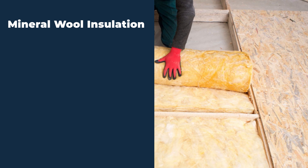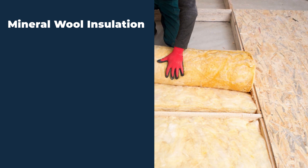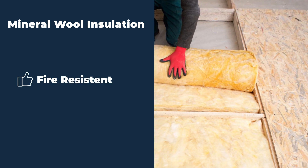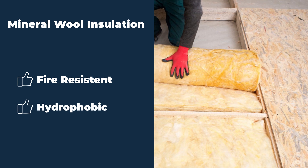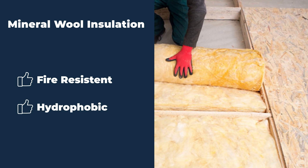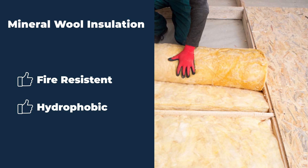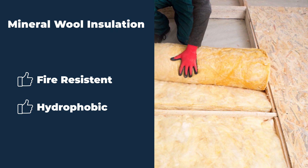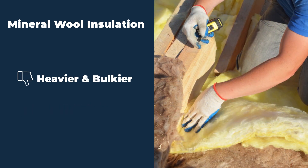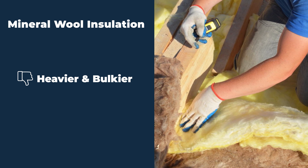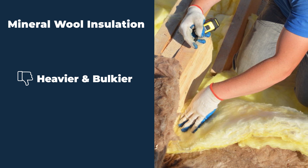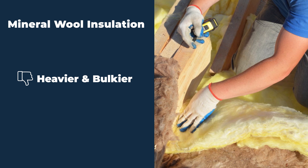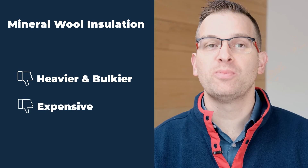Another popular choice for wall insulation is mineral wool, otherwise known as rock wool or stone wool. Like some of the other insulations, mineral wool is naturally fire resistant. It's also hydrophobic, so it has a resistance to water or moisture that is better than fiberglass and cellulose. A few of the downsides are that it's a bit heavier and bulkier than fiberglass, though it still has a fairly simple, straightforward installation process, and it also tends to cost more than fiberglass.